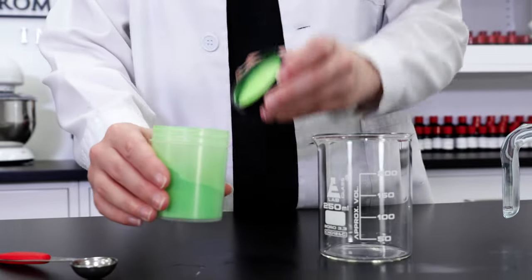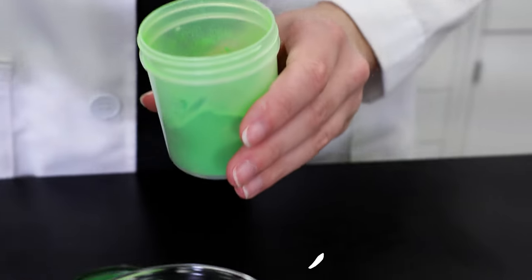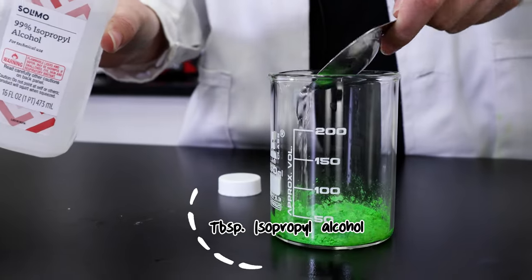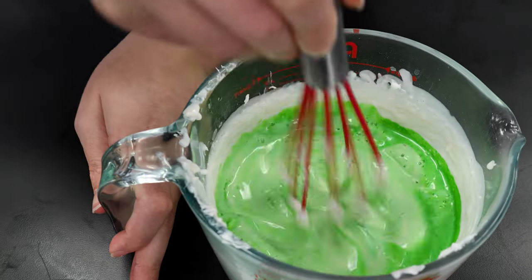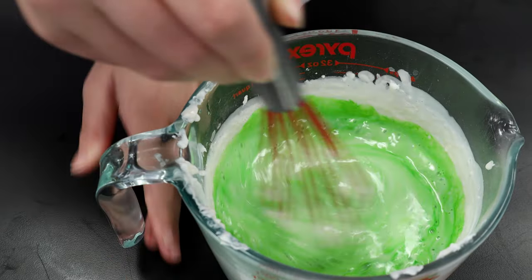We're going to give these clovers a pop of color with some green mica powder. Disperse about a teaspoon of the mica powder into some isopropyl alcohol to minimize clumps and add it into the soap. With one last stir, our shave soap is ready to be poured.